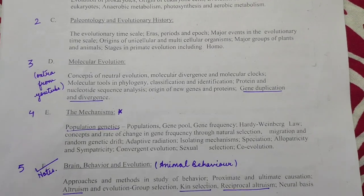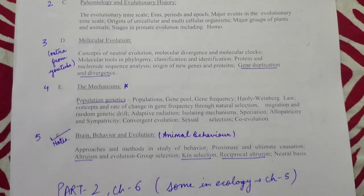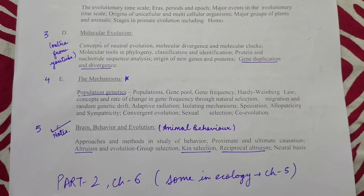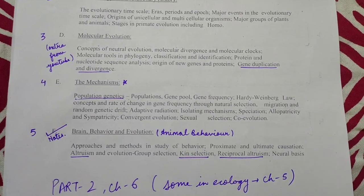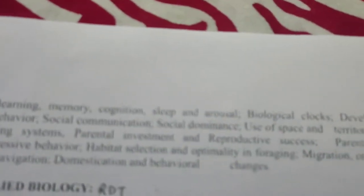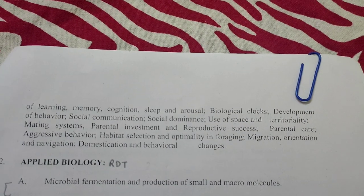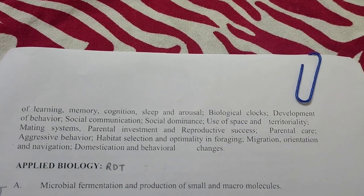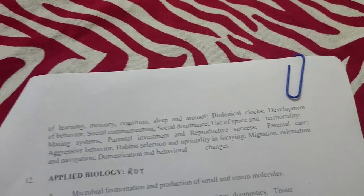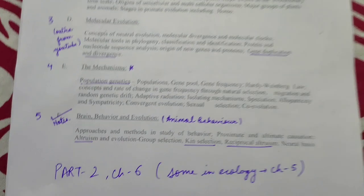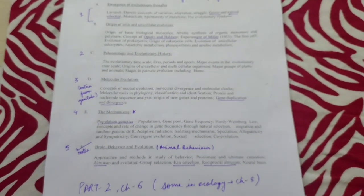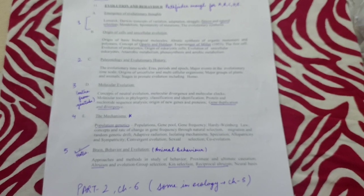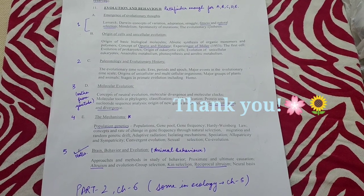Then do the respective parts in further days. For the fifth part, that is the f part, I have notes from animal behavior class, so I'll do it from there. For molecular evolution, you can do it somewhat from YouTube — gene duplication, divergence is important, and mechanisms is also important.